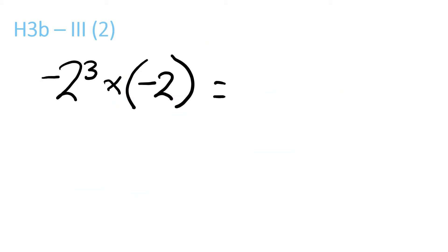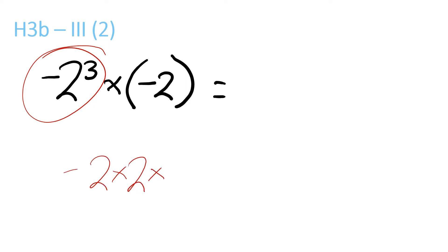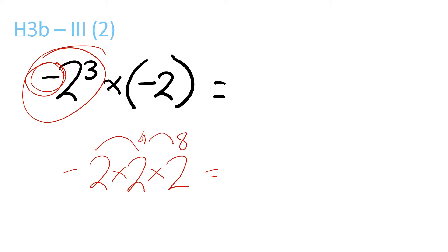Question 2. We have this part, so that would be minus 2 times 2 times 2. Since it's not in brackets, we only repeat the minus once. So now, just ignore the minus for now but keep it in your mind. 2 times 2 is 4, 4 times 2 is 8. So it would be minus 8, because you remembered that minus from before.